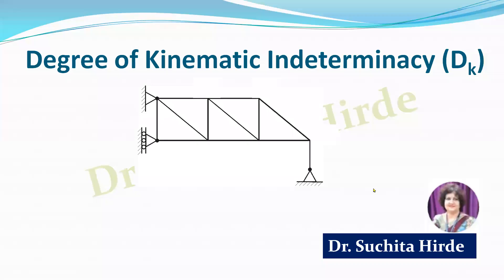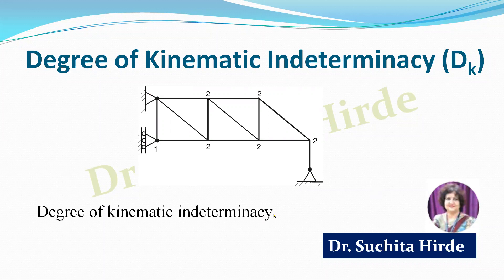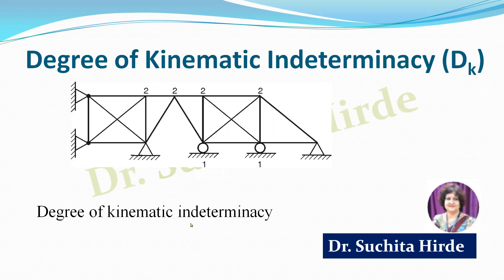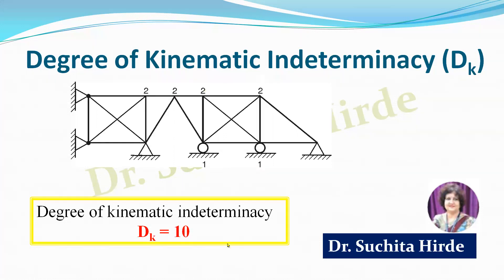Let us consider one more example. Write 2 for every joint, then 1 at roller support and 0 at hinge support. Counting all, the degree of kinematic indeterminacy dk in this case is 11. For the next truss example, with the same method — 2 plus 2 plus 2 plus 2 equals 8, plus 9 and 10 — degree of kinematic indeterminacy for that truss is 10.